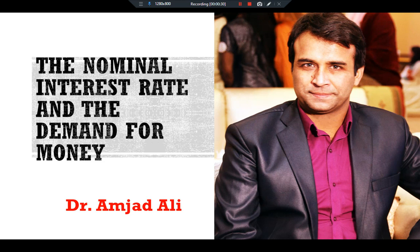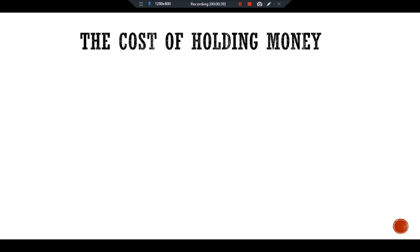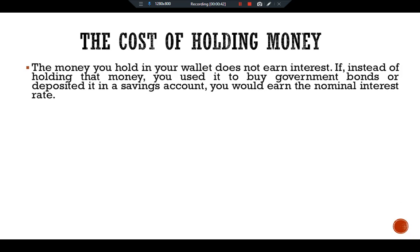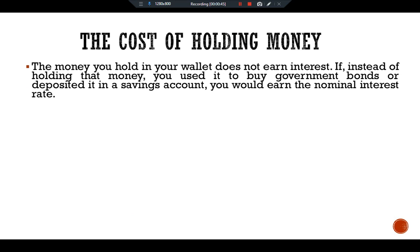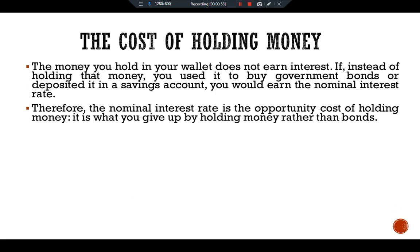Here we add another determinant of the quantity of money demanded — that is the nominal interest rate: the cost of holding money. The money you hold in your wallet does not earn interest. If instead you use it to buy government bonds or deposit it in a savings account, you would earn the nominal interest rate. Therefore, the nominal interest rate is the opportunity cost of holding money — it is what you give up by holding money rather than bonds.